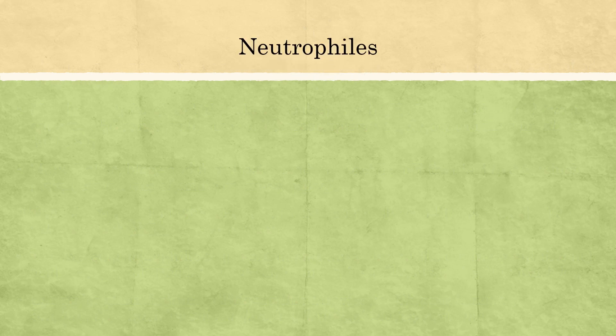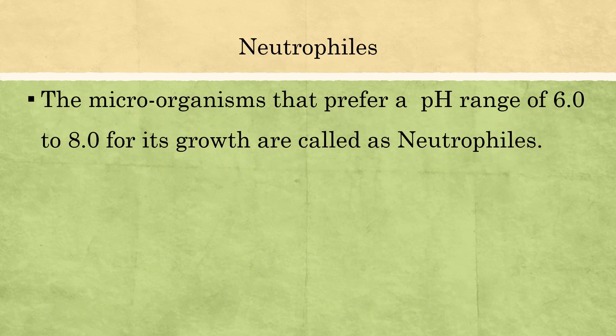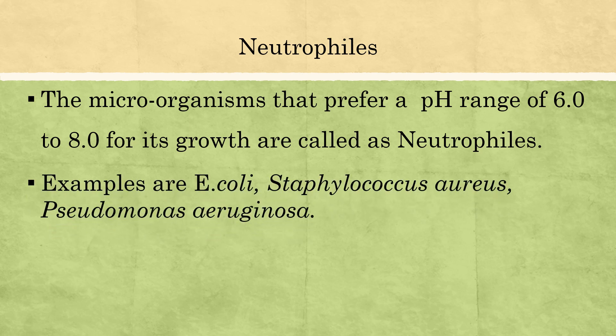Neutrophiles are microorganisms that prefer a pH range of 6 to 8 for their growth — that is, near the neutral pH of 7. Examples of neutrophiles are Escherichia coli, Staphylococcus aureus, and Pseudomonas aeruginosa.